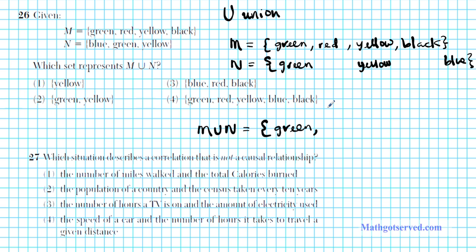These two greens just count as one green, and then red from set M, and then these two yellows count as one, and then black from set M, and then blue from set N. So this is M union N, and that is option number four. That's the correct answer.